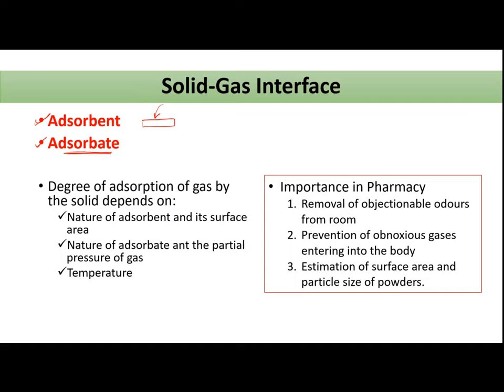How much degree of adsorption of gas on solid will happen depends upon: first, the nature of the adsorbent (the solid); second, the nature of the adsorbate; third, the partial pressure of the gas over the solid surface where adsorption has to occur; and fourth, the temperature at which the adsorption process is carried out.